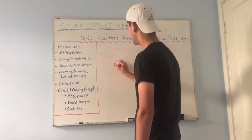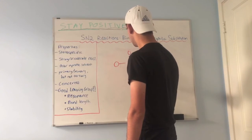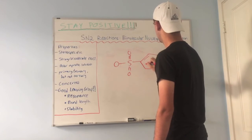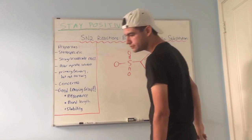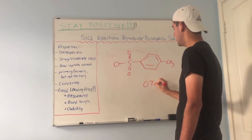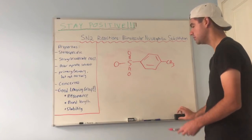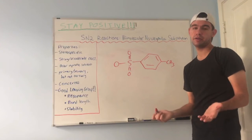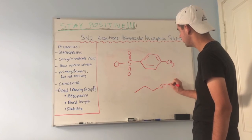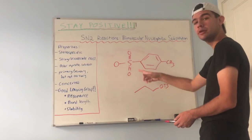Another leaving group you'll see a lot is tosylate — abbreviated as OTs — which is your best friend in synthesis. It's a bit complicated to draw every time, so chemists usually just attach it to a carbon chain by writing OTs. It's also a very good leaving group due to all the hyperconjugation and resonance.